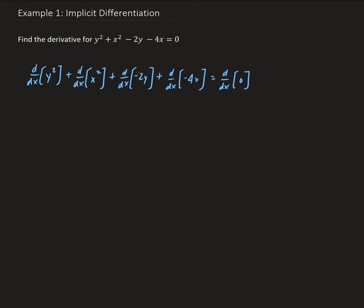We're going to apply implicit differentiation to each term. For the first term, we have y squared, so we need to apply the chain rule, keeping in mind that we're taking the derivative with respect to x. So we're going to get 2y times dy/dx.